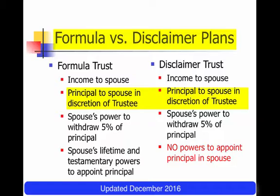If the surviving spouse needs more than the income and the five percent that can be withdrawn, then the trustee has the discretion to pay principal to the spouse. That doesn't mean the spouse can go in and grab the principal — it means the spouse can ask the trustee for principal, and the trustee's job is to evaluate that request and determine whether it's reasonable and how it affects the other beneficiaries, who are the people who would inherit at the death of the surviving spouse.